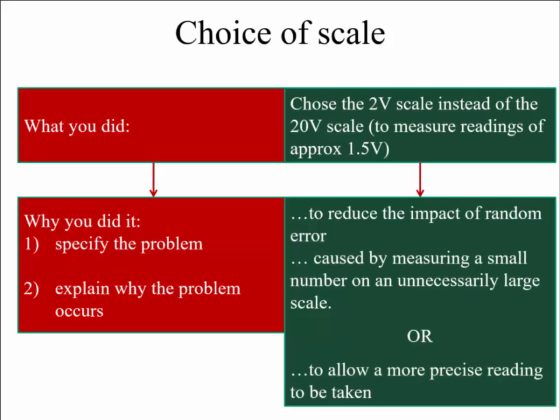Well, the convoluted way of saying it, as I realized when I was writing it, was to reduce the impact of random error, and that was caused by measuring a small number on an unnecessarily large scale. I'm not really happy with that explanation. I'd probably prefer to see, just to allow a more precise reading to be taken. You could go into, if you were really asked to demonstrate why you were choosing a particular thing, about how, perhaps what level of uncertainty you would have gotten with the 20 volt scale versus the 2 volt scale. So that's just some ideas.